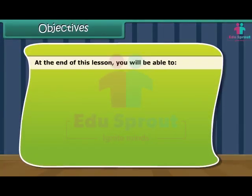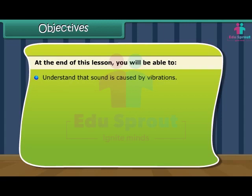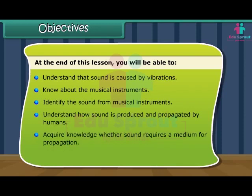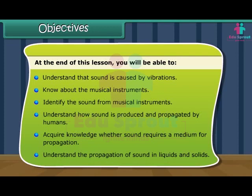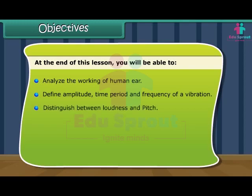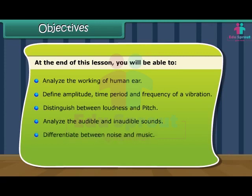Objectives: At the end of this lesson, you will be able to understand that sound is caused by vibrations, know about musical instruments, identify the sound from musical instruments, understand how sound is produced and propagated by humans, acquire knowledge of where sound requires a medium for propagation, understand the propagation of sound in liquids and solids, analyze the working of the human ear, define amplitude, time period, and frequency of a vibration, distinguish between loudness and pitch, analyze audible and inaudible sounds, differentiate between noise and music, and understand noise pollution and its control measures.